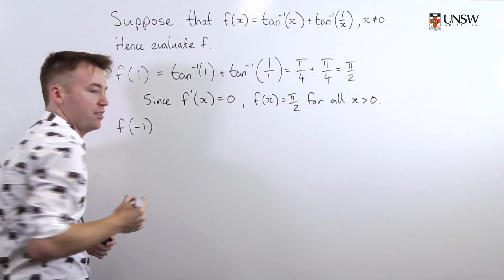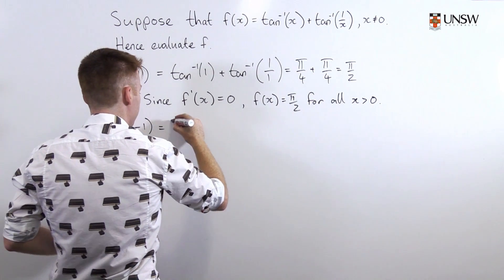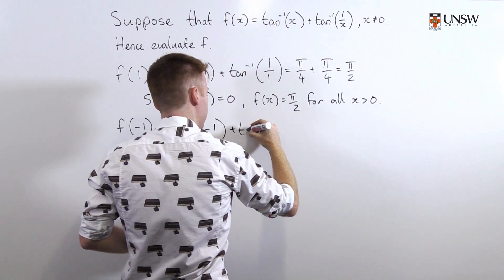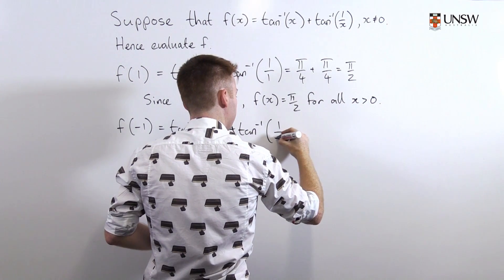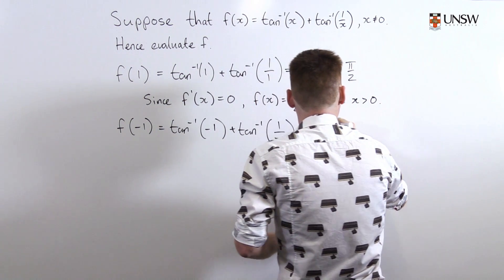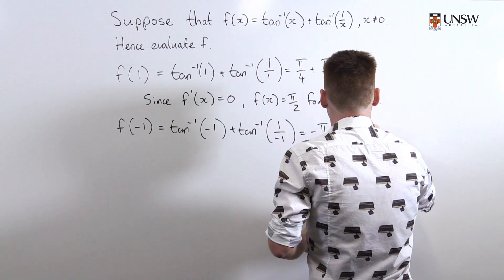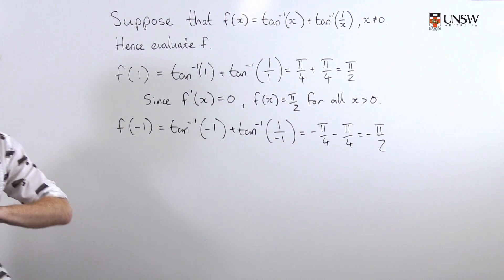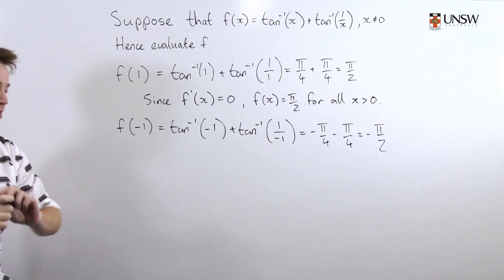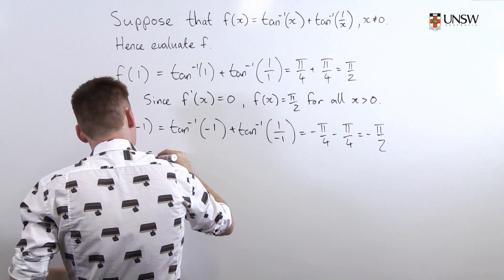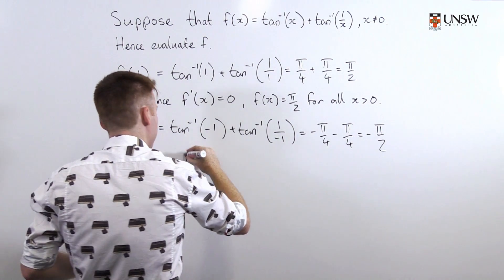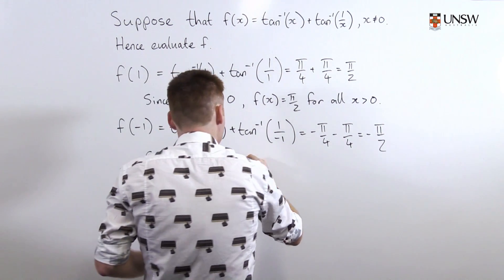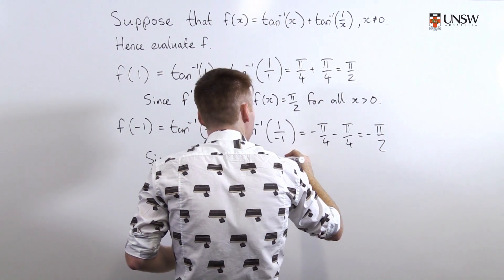f(-1) now turning to the negative x-axis, this is equal to tan⁻¹(-1) plus tan⁻¹(-1) which is -π/4 minus π/4 which is -π/2. So, aha, a different constant. Since we make the same argument f'(x) is equal to 0 on the negative x-axis, then all the f values are the same.